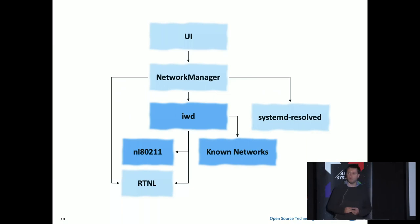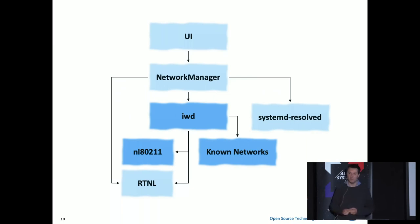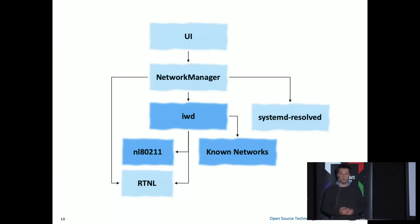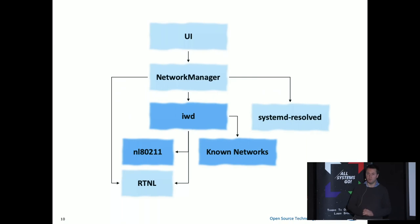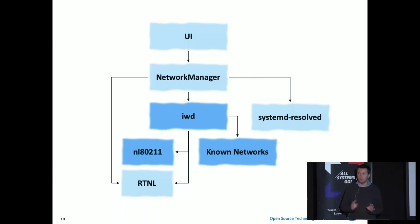IWD doesn't need Network Manager to do anything because we do everything. We remember the networks, automatically roam for you, know when to roam, know when to scan. We know how to talk to the access point when your signal goes weak and say, 'Don't you have a better access point in your vicinity we can use?' Even if the access point asks us to scan on its behalf, we can do that. So at the end of the day, you can trust IWD to do everything - just give it the passphrase, it remembers it, and reconnects.